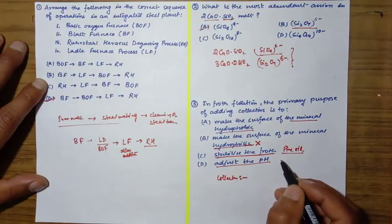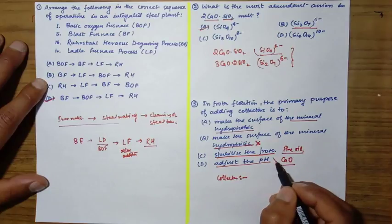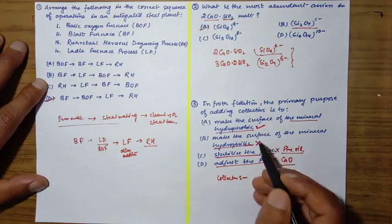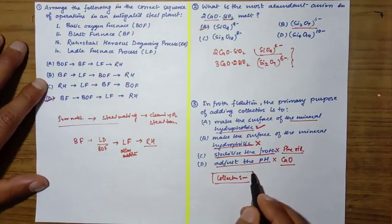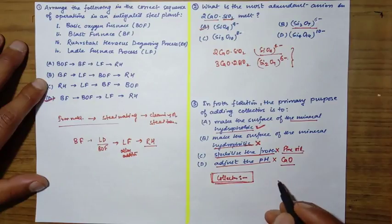Stabilize the froth - that's done using pine oil, so not correct. Adjust the pH - pH is adjusted with the help of lime, also not correct. So the correct option is to make the surface of the mineral hydrophobic.